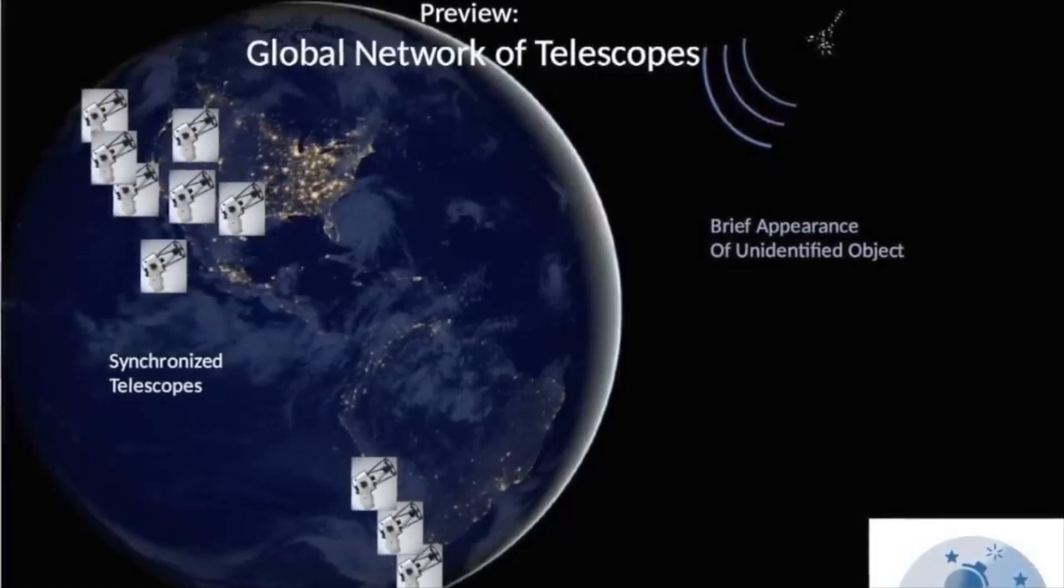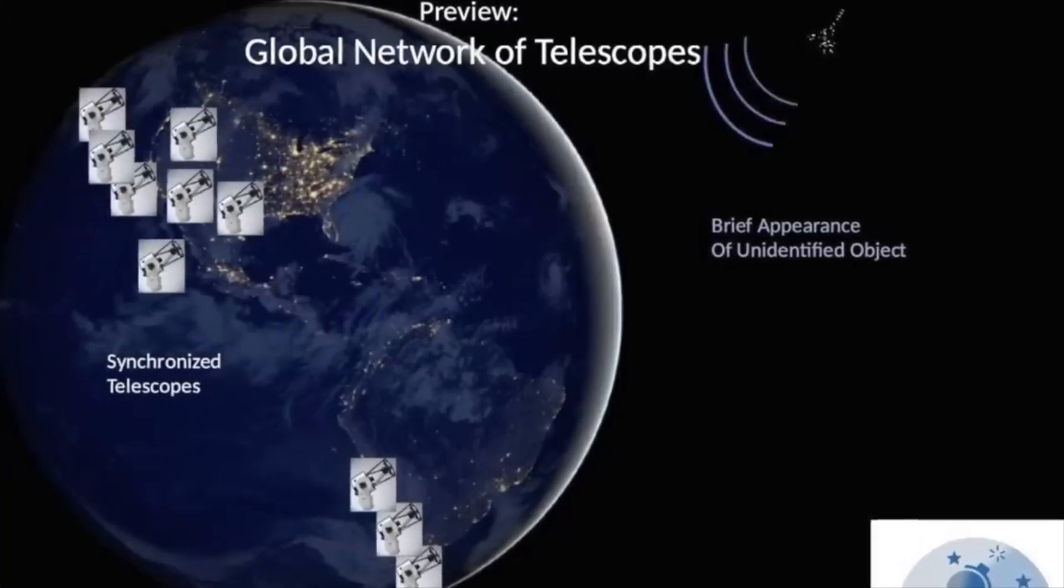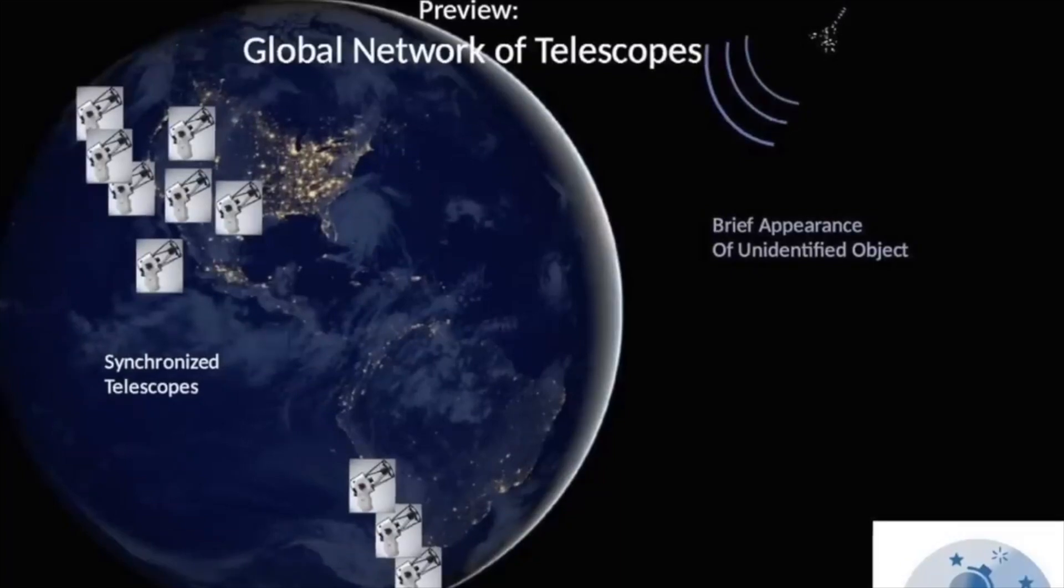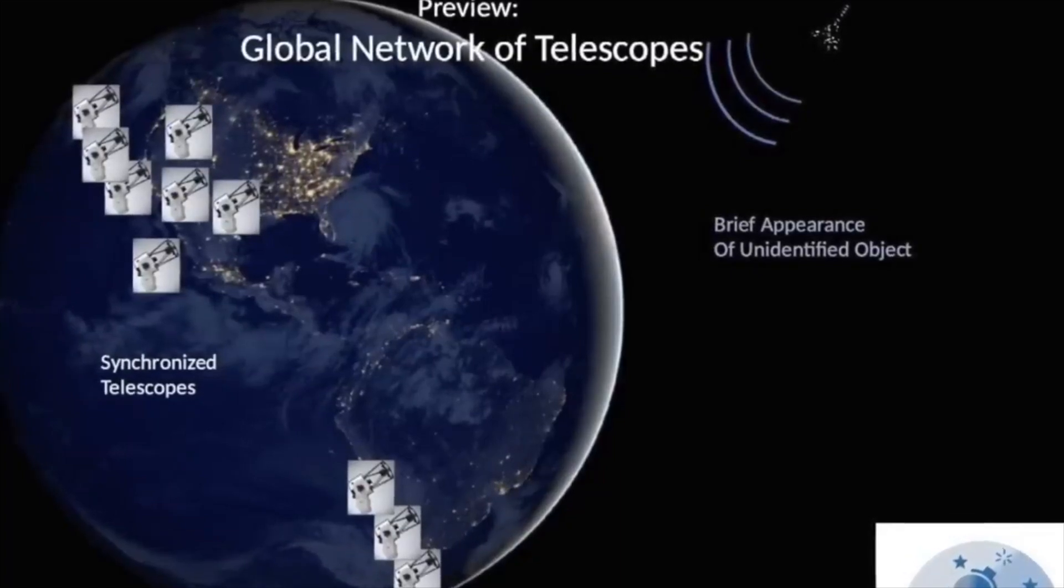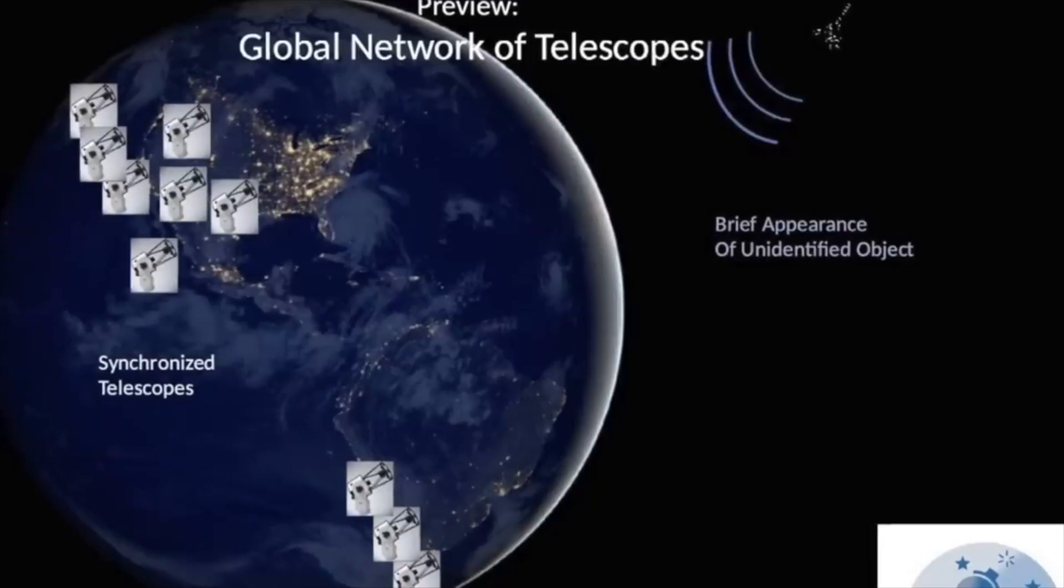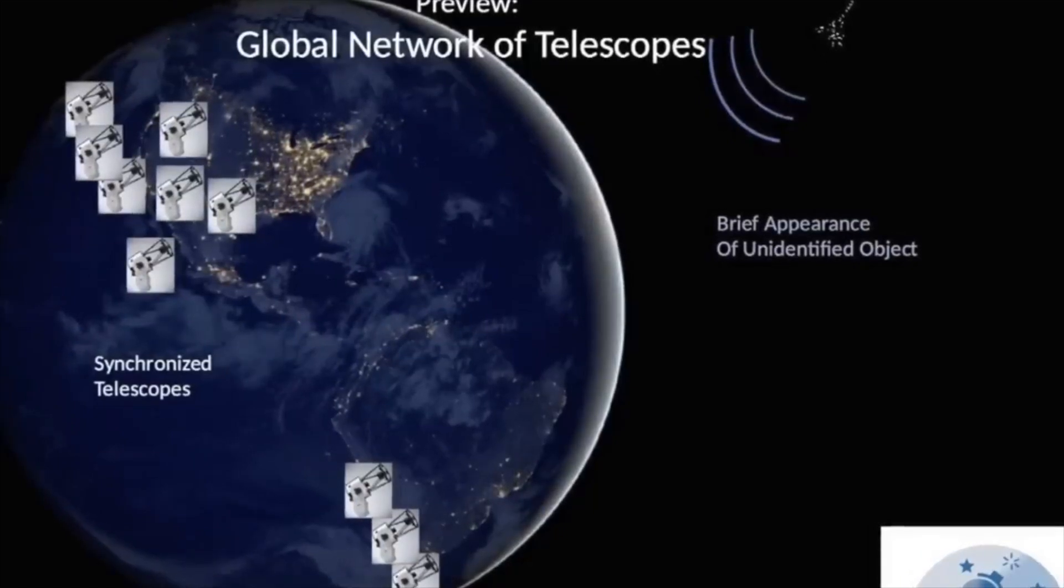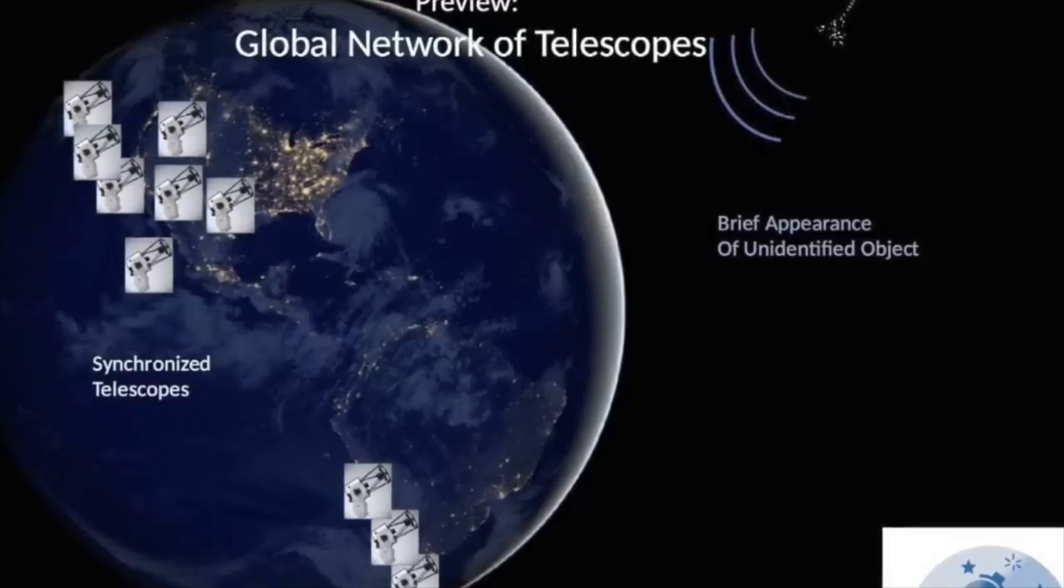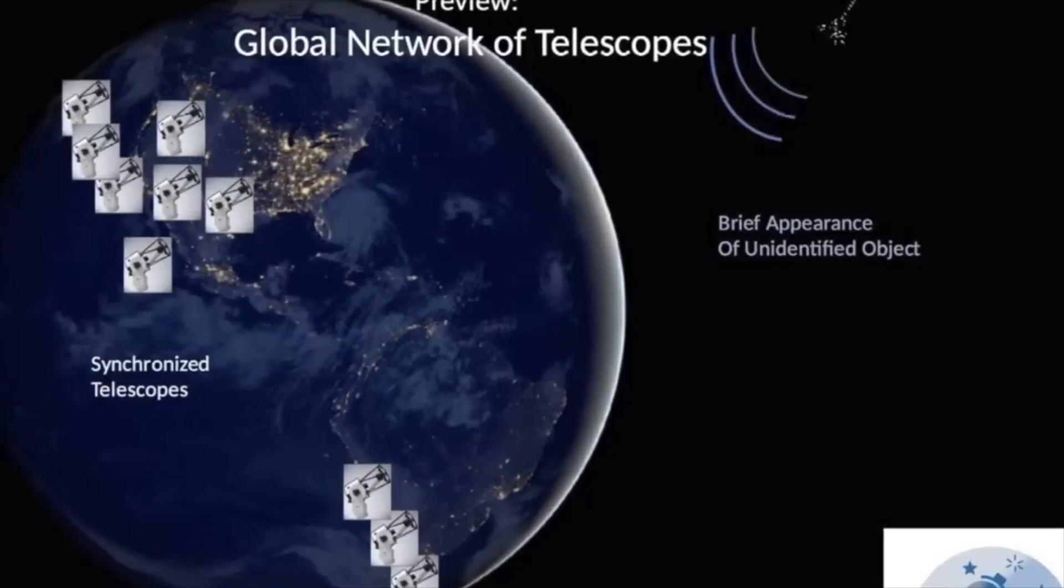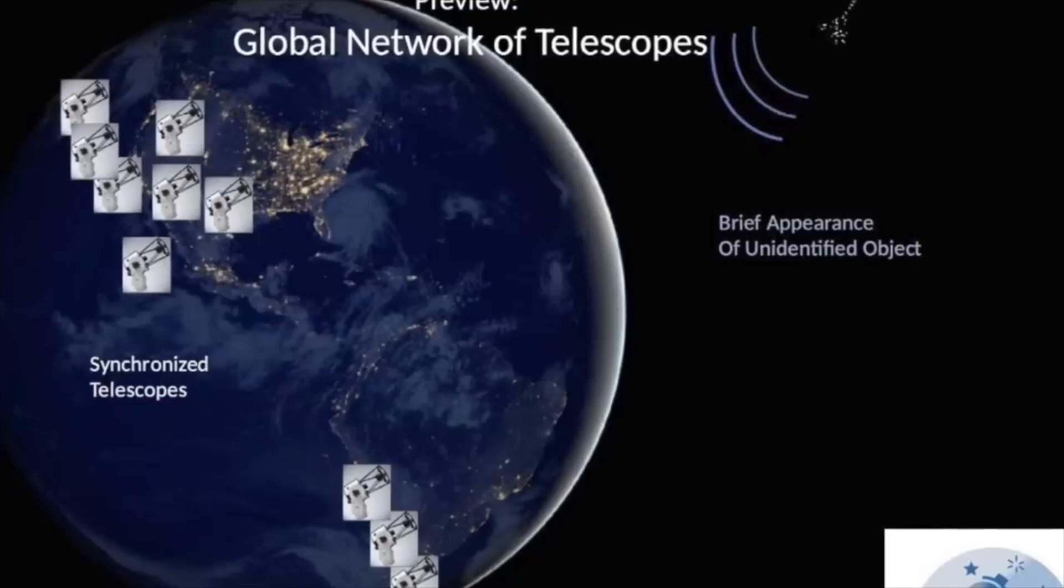At the same time, if you use at least two telescopes, you can triangulate, and you will directly say it's at this and that distance. Now, if you use 10 telescopes, you will get a very accurate distance because you can get the 3D location much more accurately if you have many more combinations of triangulating.